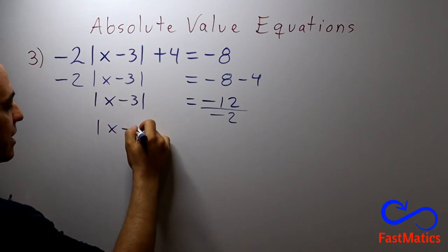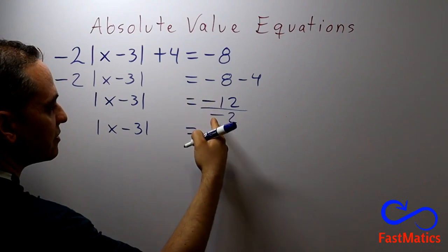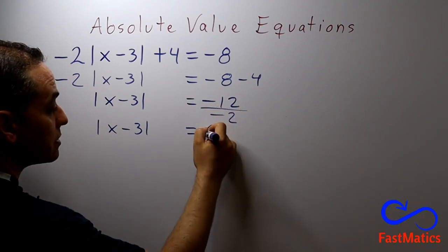After that, you have x minus 3 is equal to negative divided by negative is positive, 12 divided by 2 is 6.